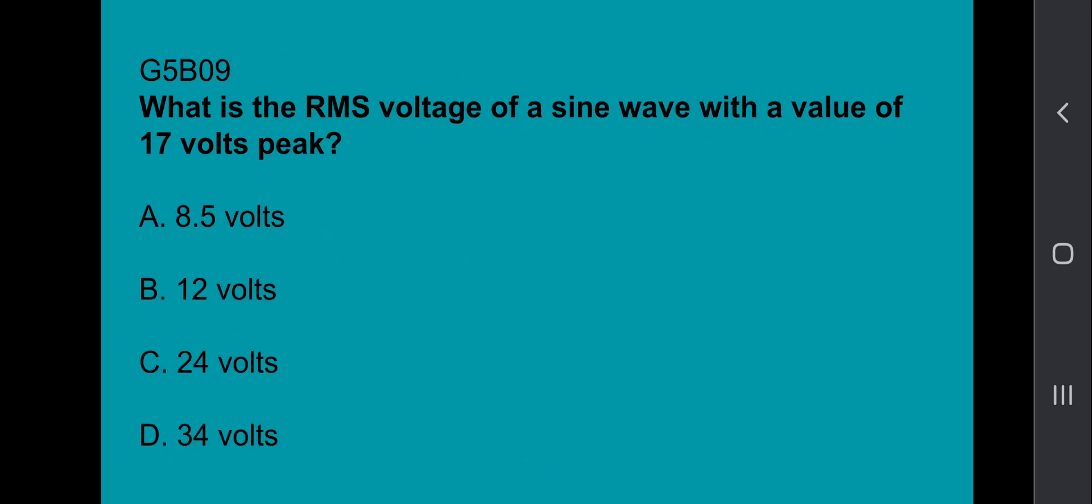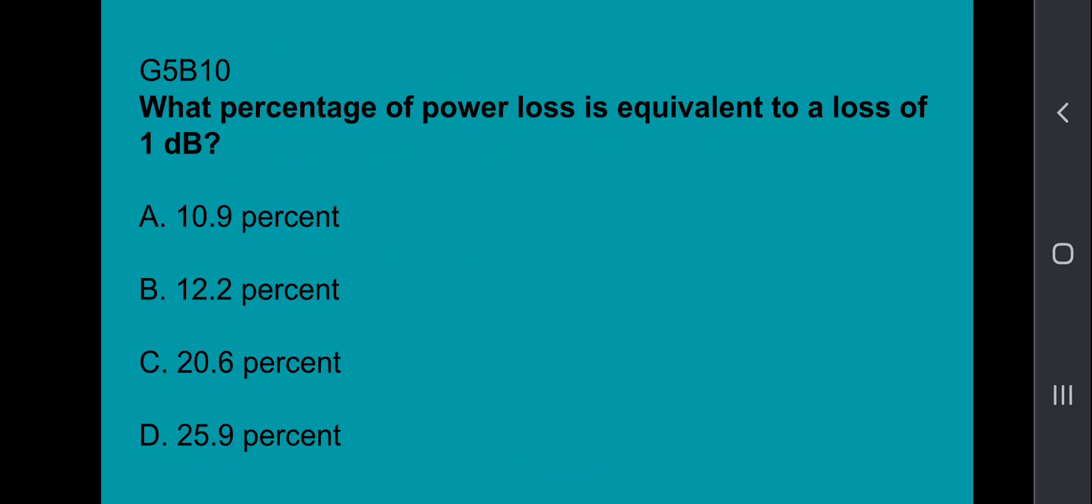G5B09, what is the RMS voltage of a sine wave with a value of 17 volts peak? 12 volts. G5B10, what percentage of power loss is equivalent to a loss of 1 dB? 20.6%.